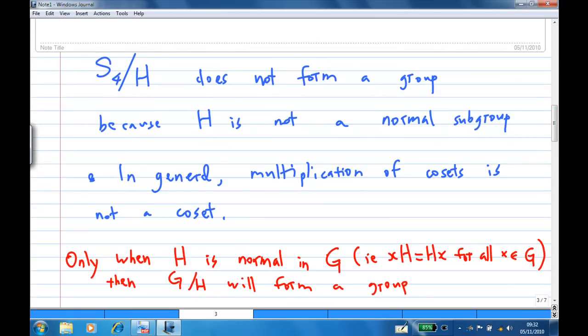Finally, look at the collection of all cosets, left cosets now, S4 slash H. Now this does not form a group. This is because in order to form a group, H must be a normal subgroup. Now H is not a normal subgroup, so multiplication of cosets is not a coset in this case. So I must stress that only when H is normal in G, that is XH equals HX for all X in G, then G slash H will form a group.